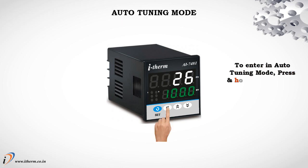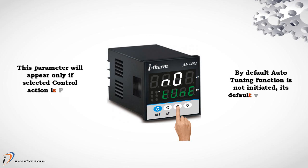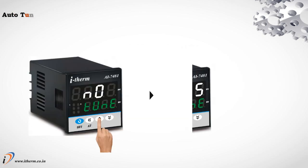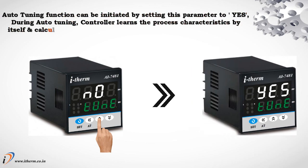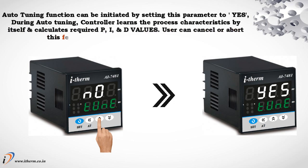Auto Tuning Mode. To enter in auto tuning mode, press and hold the Shift key for a minimum of 3 seconds. This parameter will appear only if the selected control action is PID. By default, auto tuning function is not initiated — its default value is NO. Auto tuning can be initiated by setting this parameter to YES. During auto tuning, the controller learns the process characteristics by itself and calculates the required P, I, and D values. The user can cancel or abort this feature by setting this parameter to NO.